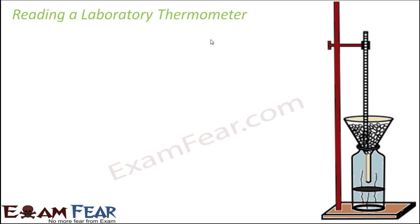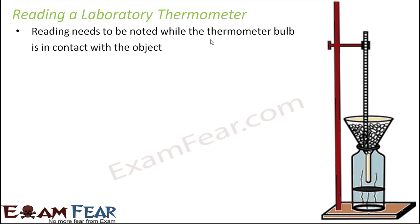How do we read a laboratory thermometer? The basic concept remains the same — find out how much one small line represents in degrees and read accordingly. However, the way temperature is measured using a laboratory thermometer is a little different from the clinical thermometer. The reading must be noted while the thermometer bulb is still in contact with the object. One key difference is that the laboratory thermometer does not have a kink, so the mercury level falls back immediately once you remove it from the object.